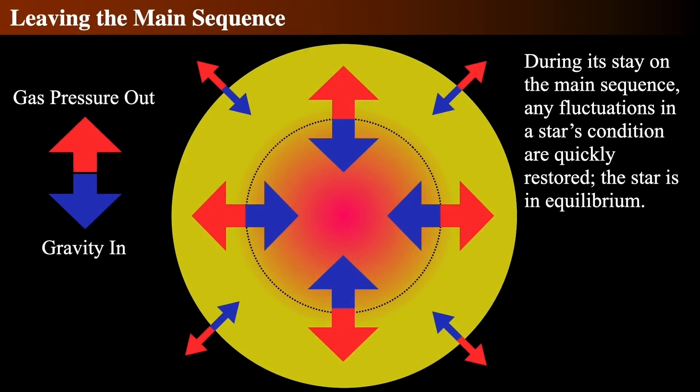When a star starts to run out of fuel, both balances begin to break down and the star leaves the main sequence.